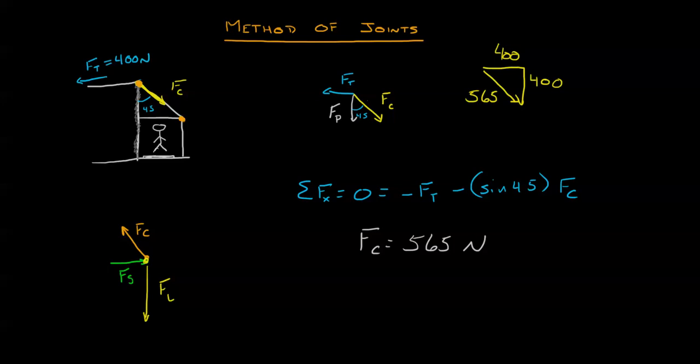Now I've taken a look at the method of joints, and the method of joints is really good if you want to start at some sort of unknown or start where the known is. From there you can use that information to find the tension here, and then you can use that information to find the tension here.